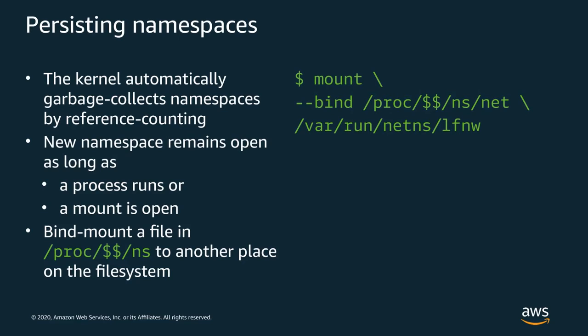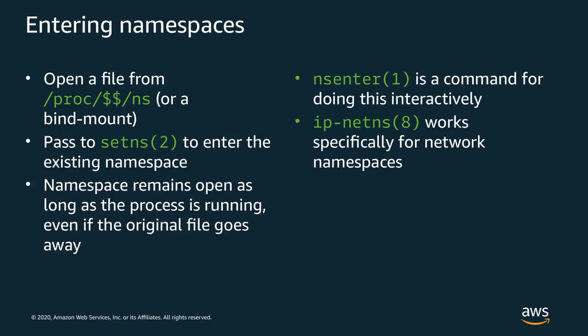Some tools, like ip-netns, expect to operate on bind mounts at particular paths. For a running process to enter an existing namespace, it can use the setns syscall, which requires a file descriptor as the identifier for the target namespace. The file descriptor can be obtained by opening one of the namespace symlinks in proc, or by opening a bind mount of it elsewhere on your system. There are a couple of tools that can help you enter namespaces without making the syscall yourself: nsenter and ip-netns.